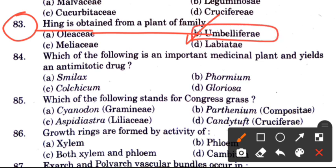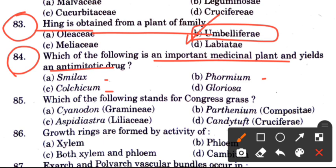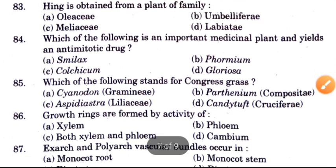Question 84: Which of the following is an important medicinal plant that yields an anti-mitotic drug? Options are Smilax, Phormium, Colchicum, and Gloriosa. The answer is C, Colchicum, which works as an anti-mitotic drug.